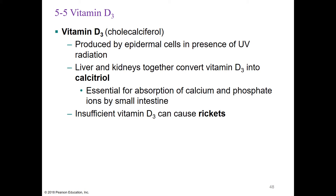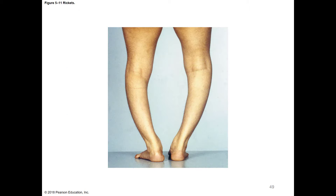Vitamin D is produced by epidermal cells in the presence of UV radiation—small amounts are beneficial. The liver and kidneys together convert vitamin D into calcitriol, which is essential for absorption of calcium and phosphate ions by the small intestine. Without calcitriol, we can't have strong bones. Without enough vitamin D or vitamin D3, this can cause rickets—a condition that causes bending of the bones, making them more flexible and causing deformity under the weight of the body.